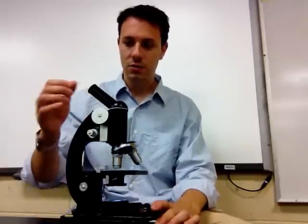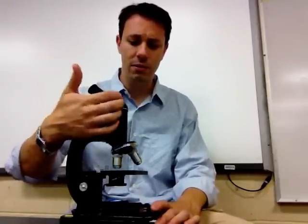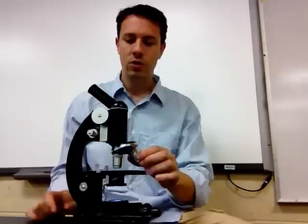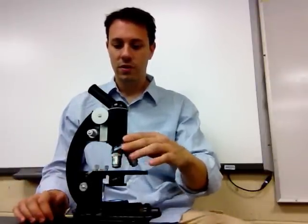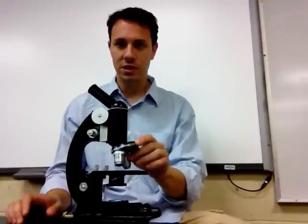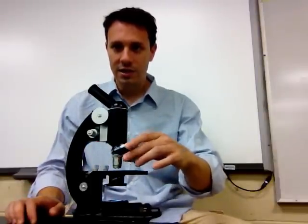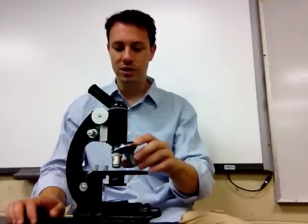We have the arm or the neck. We have the eyepiece up here. We have the body tube. We have our objectives and the nose piece. Objectives swivel. These are the objectives and they swivel and they lock into place. So, whenever you're using this, make sure that you're swiveling it and locking it into place.